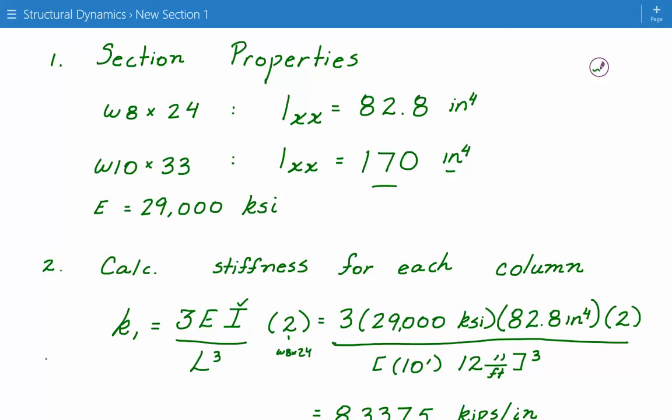And so we won't go into how these stiffnesses were evaluated, but these can be evaluated. So just plug in the numbers. 3 times 29,000 KSI times the moment of inertia for W8 by 24 is 82.8 inches to the fourth power. Multiply by number 2. This is number of columns that are W8 by 24. And then divide it by L cubed. So we have 10 feet. And then we have to convert it into inches. So we multiply it by 12. And this whole quantity is to the third power.